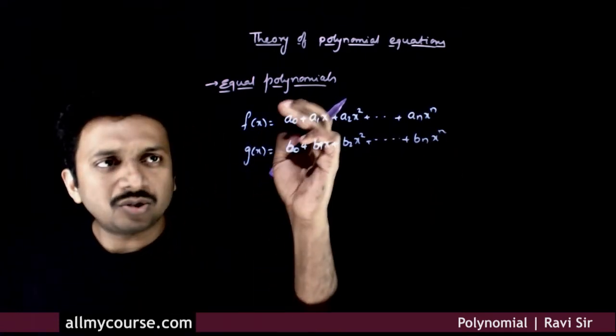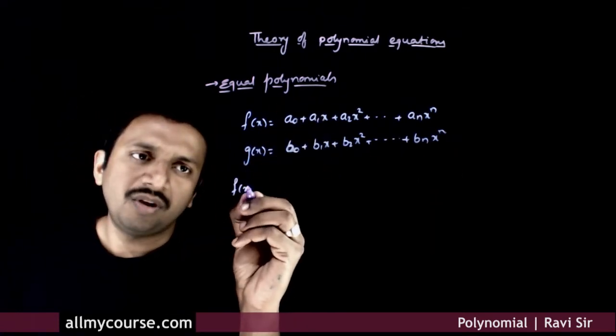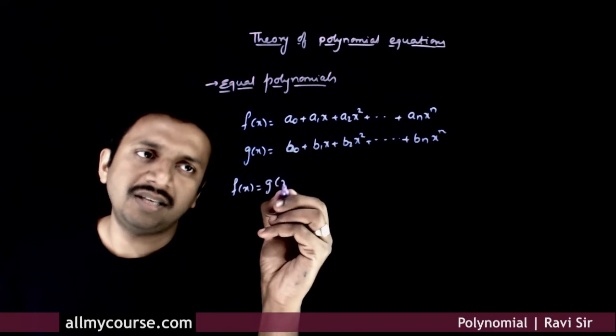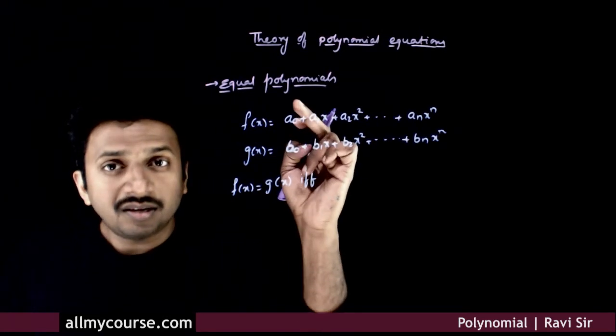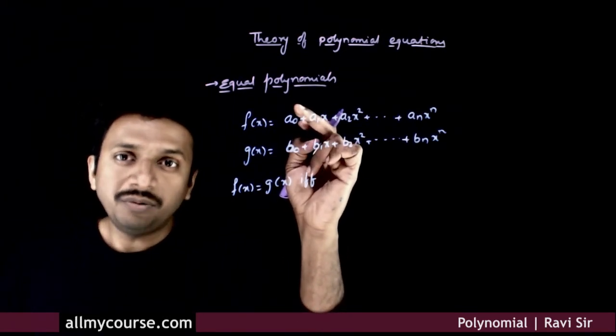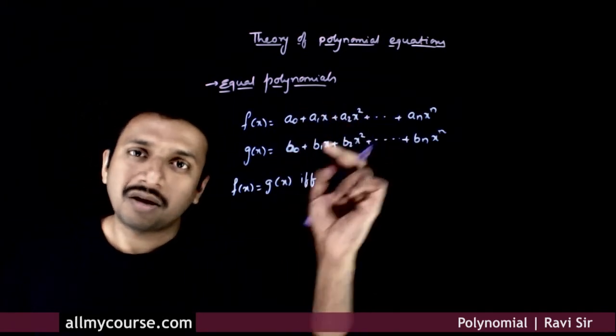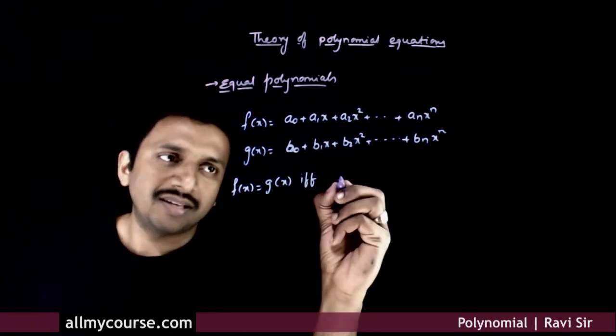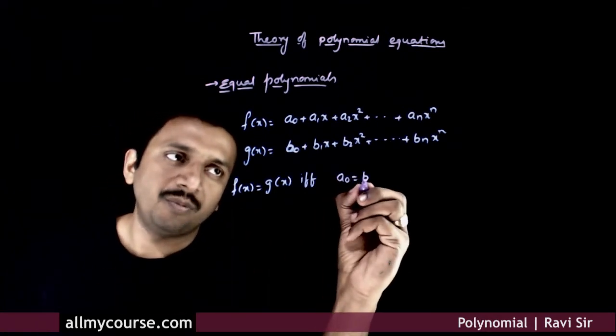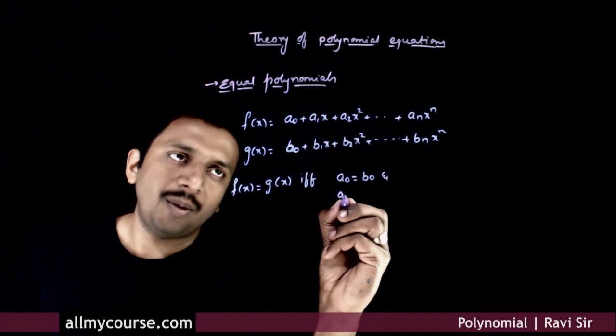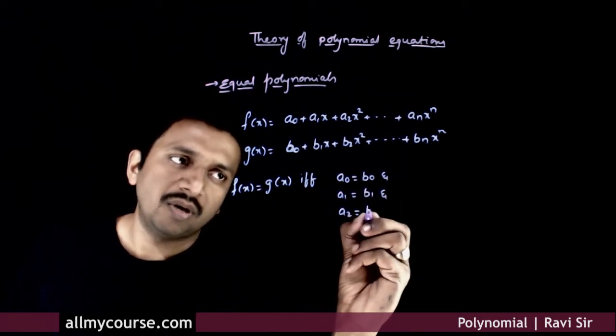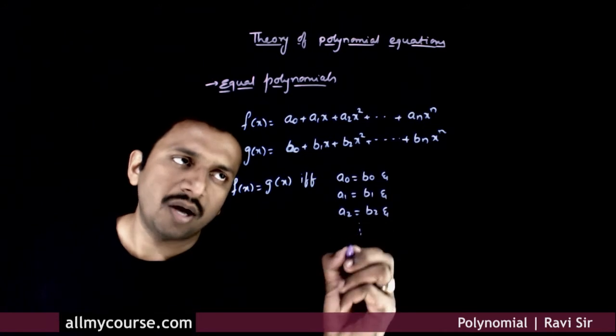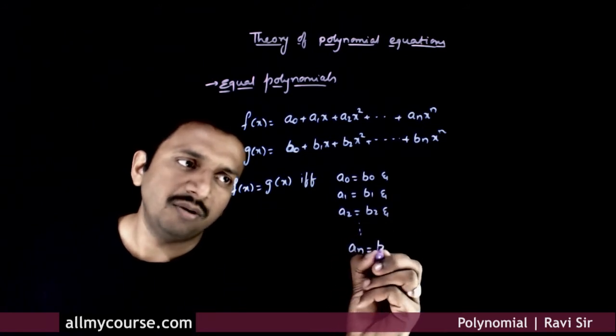So, these two polynomials will be equal, f(x) equals g(x), if and only if the coefficients corresponding to the like powers of x are all equal: a0 equals b0, and a1 equals b1, and a2 equals b2, and so on, an equals bn.